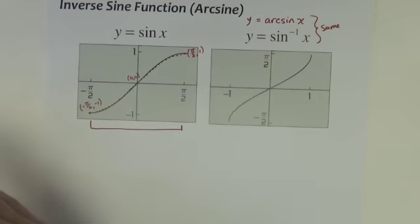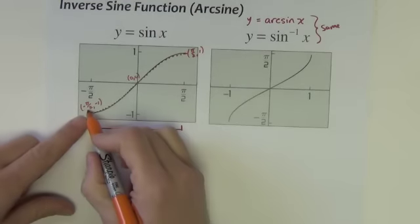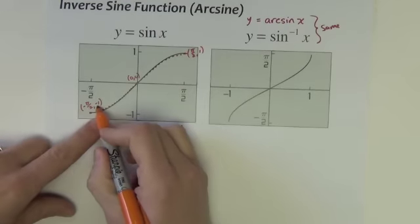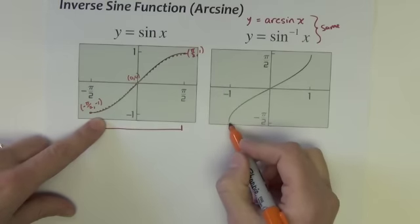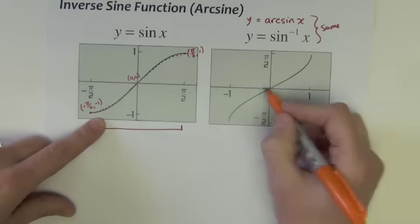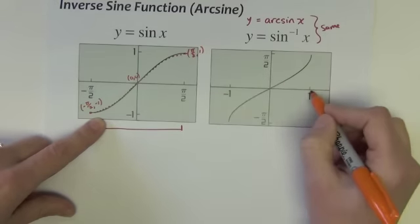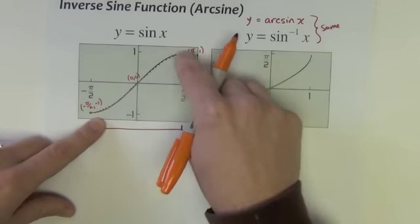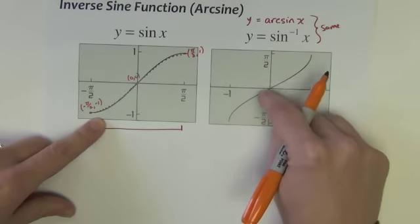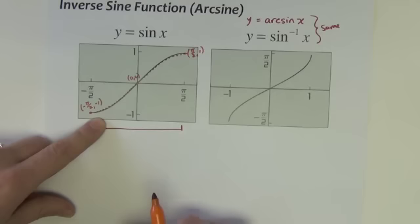All the y's become x's, all the x's become y's. So this negative pi over 2 comma negative 1 becomes the point negative 1 comma negative pi over 2. 0, 0 becomes 0, 0. This point up here becomes 1 comma pi over 2. And when we interchange all these x and y values of every point there, we create a graph that looks like this.